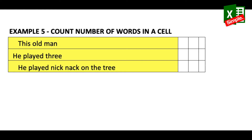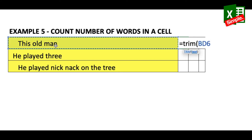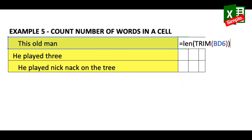Now let's look at another example — counting the number of words in a cell. Logically, we count the spaces between words and add one. Note that this sentence has extra blank spaces before the first word and after the last word. So we'll first use =LEN(TRIM(cell)) — TRIM removes leading and trailing spaces, and then LEN counts the exact number of remaining characters.